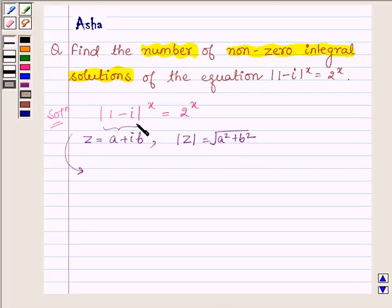Therefore, |1 - i| will be √(1² + (-1)²) raised to the power x equals 2^x.